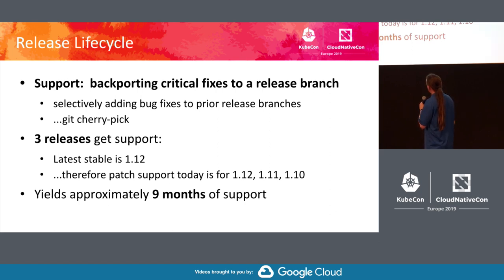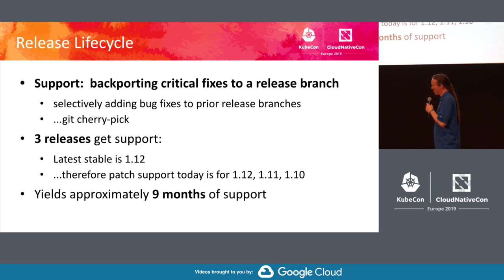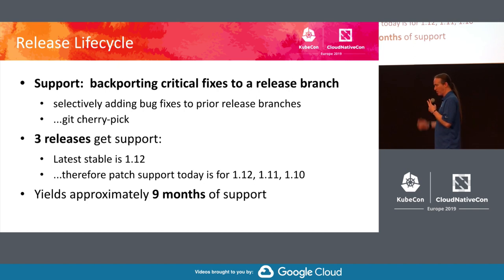We backport critical fixes to the release branch — that's a selective cherry-picking process in Git. We support three releases at a time, so currently 1.14, 1.13, and 1.12 are the supported ones. That amounts to about nine months of support on a given minor release. So if you're doing semantic versioning x.y.z — for example Kubernetes 1.13.6 — the 1.13 is considered a minor release in semantic versioning, and we give nine months of patch release support for that.